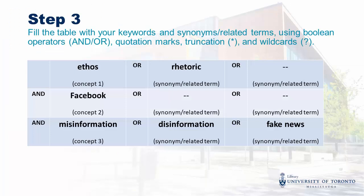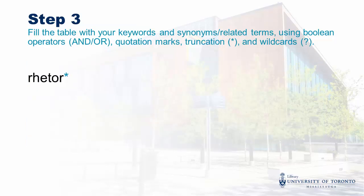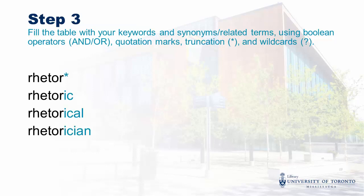The last part of creating our search string is using special characters. Quotation marks search for a whole phrase, like fake news — the database will only bring back results that use both words in that order, so we won't see articles about fake leather. Truncation lets us search for different variations of a term. For example, instead of rhetoric, we can search for RHETOR followed by the truncation symbol, which covers rhetoric, rhetorical, rhetorician, etc. The most common truncation symbol is the asterisk.